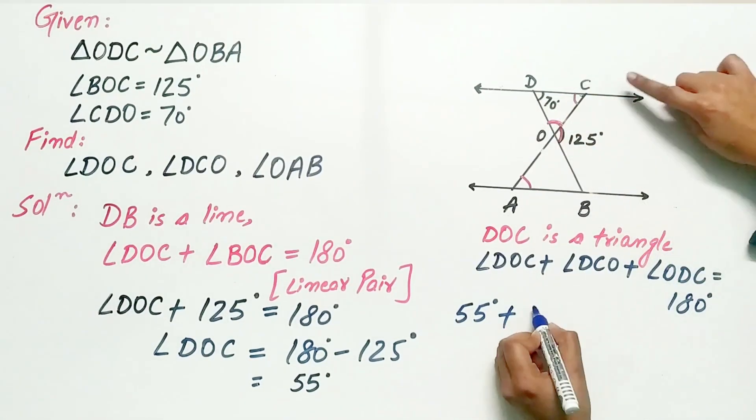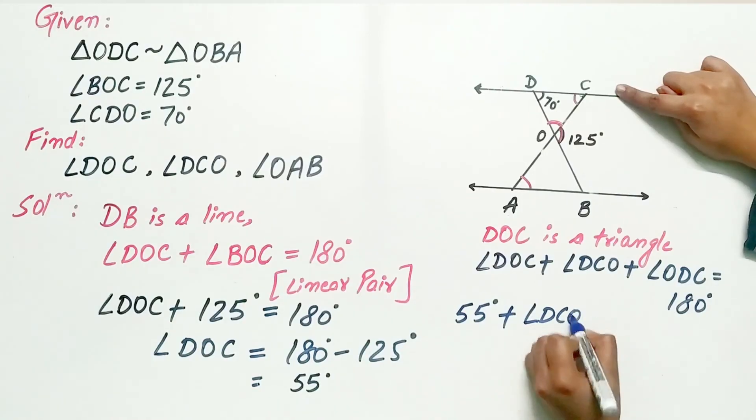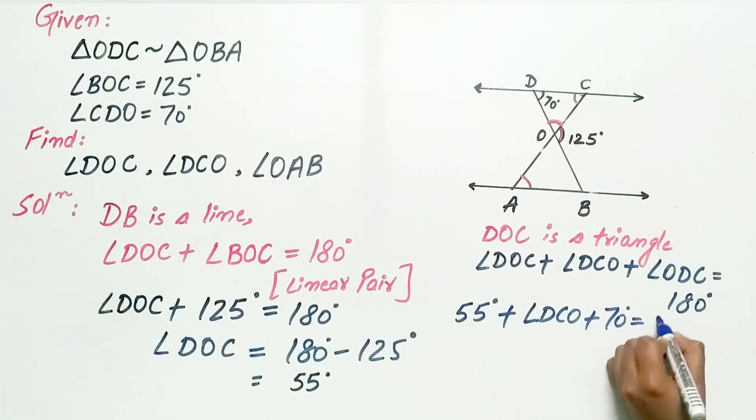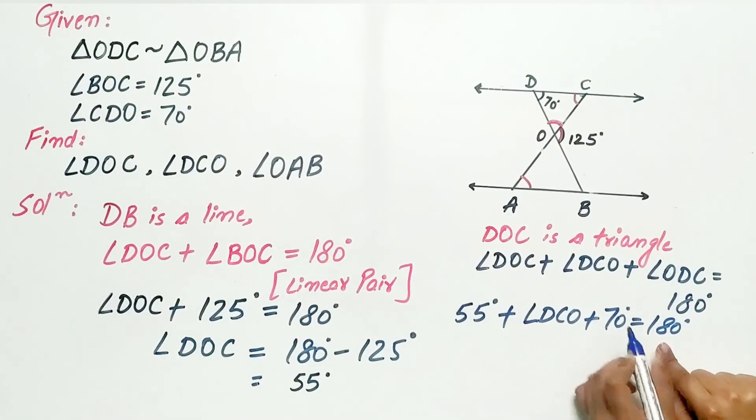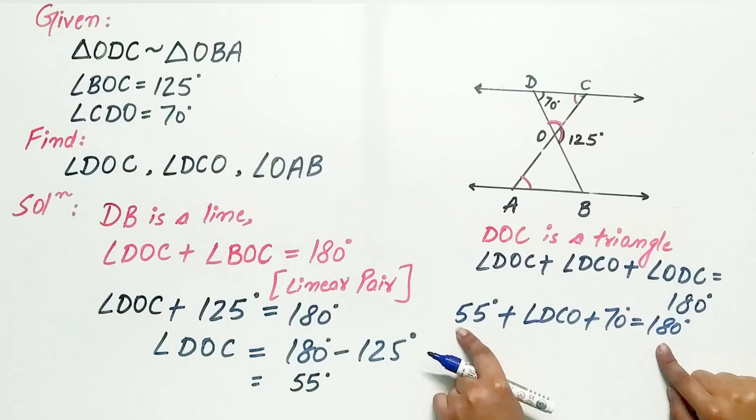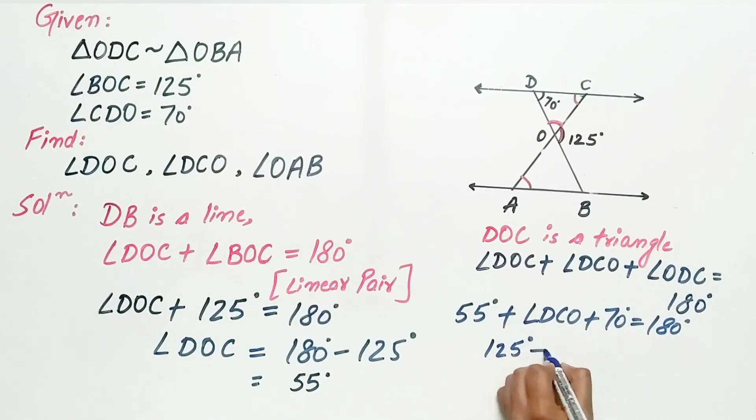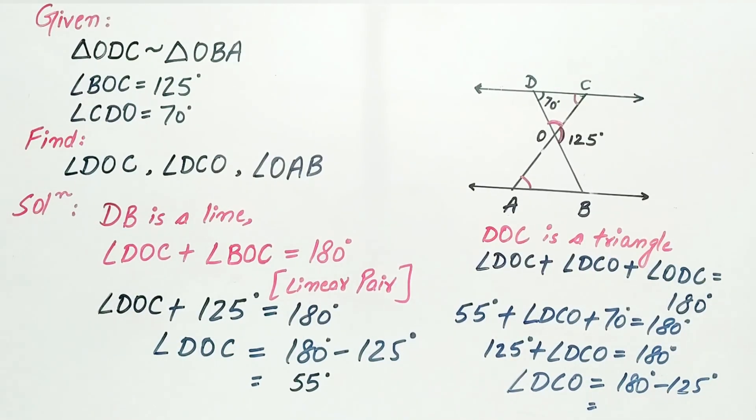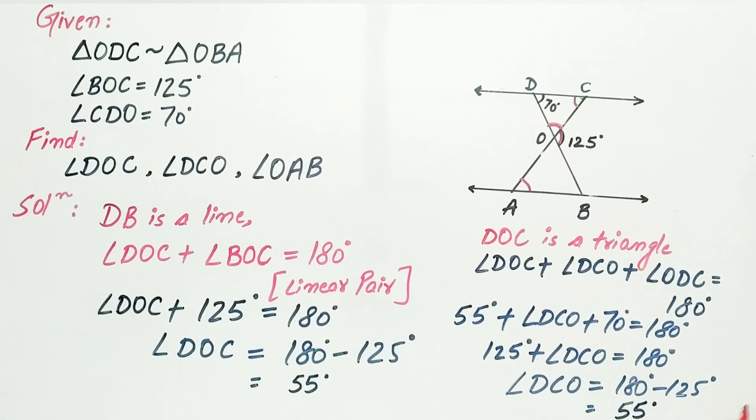Angle DCO we have to find out, angle ODC is 70 degree, which is equal to, and that summation is equal to 180 degree. 70 degree plus 55 degree is 125 degree, plus angle DCO is equal to 180 degree. Now, angle DCO is equal to 180 degree minus 125 degree, which is equal to 55 degree.